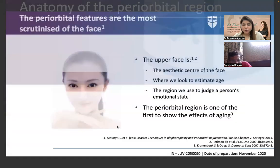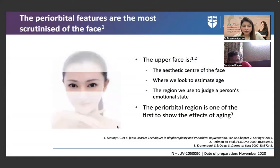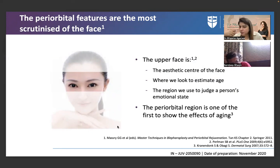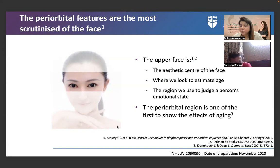Moving to the anatomy of periorbital features: they are the most scrutinized area of the face. When talking to someone, in a Zoom meeting, or looking in a mirror, it is mostly the periorbital area we focus on. The upper face is the aesthetic center — we estimate age from it and judge emotional and psychological state.